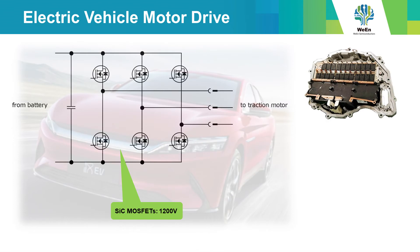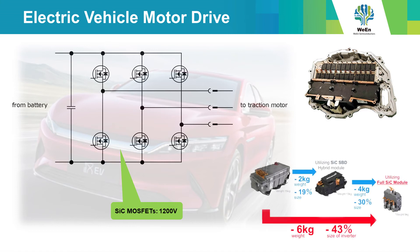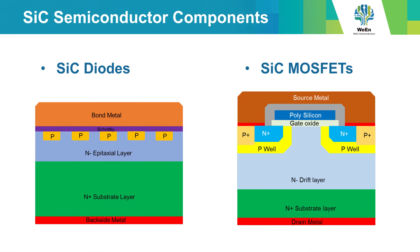The last example is a three-phase inverter which is used in EV traction. The 1200 volt silicon carbide MOSFETs enable a weight and size reduction of about 40%. Now let's have a look at the silicon carbide semiconductor components that enable all these improvements.